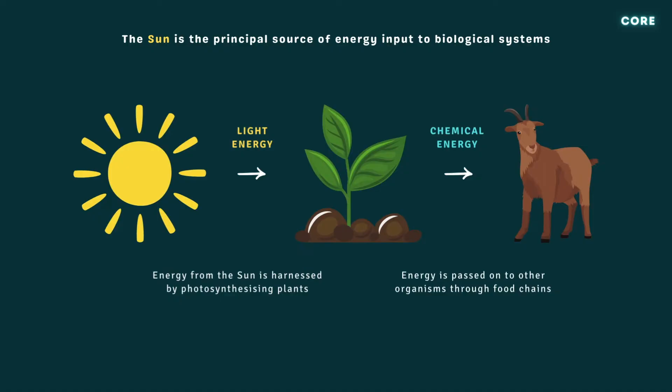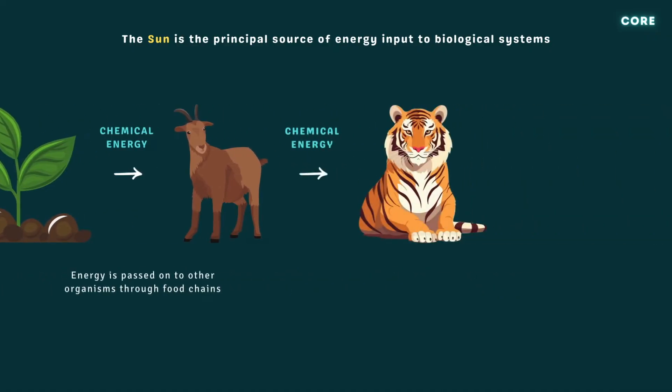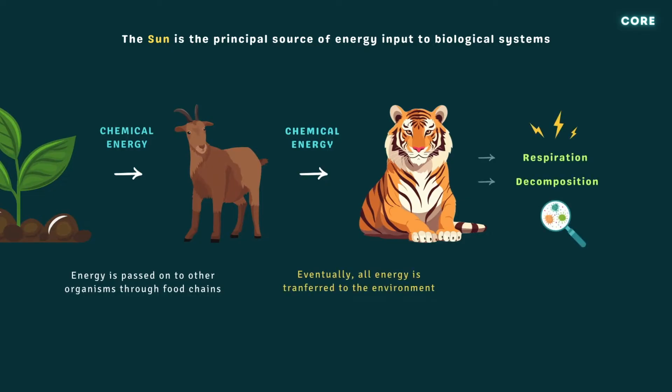When an animal eats a plant, it digests, absorbs, and assimilates some of the nutrients contained within it. If that animal is eaten by a larger animal, the chemical energy locked up in its tissues is passed on again. Eventually, all the energy in organisms is transferred to the environment. Much is lost as heat, generated during respiration, or released by decomposers like fungi and bacteria.